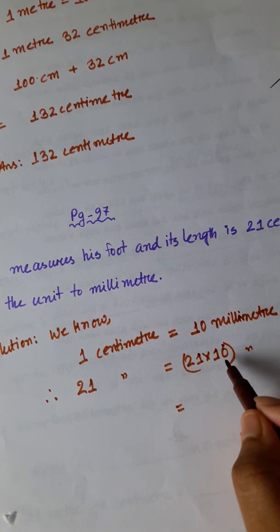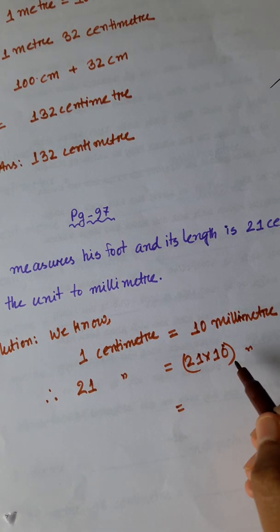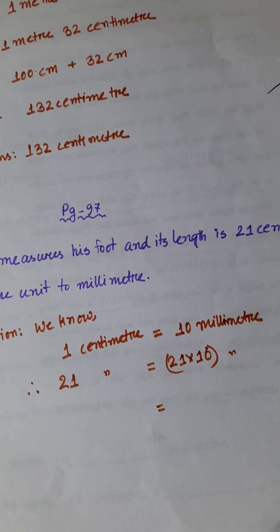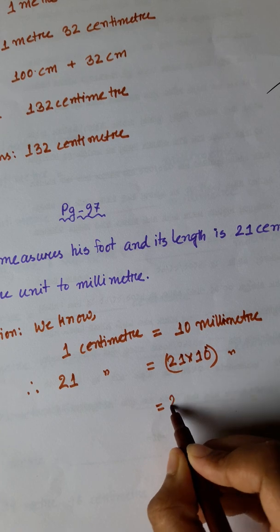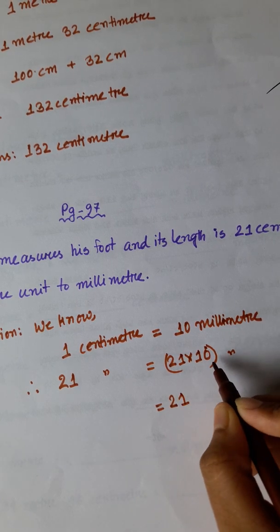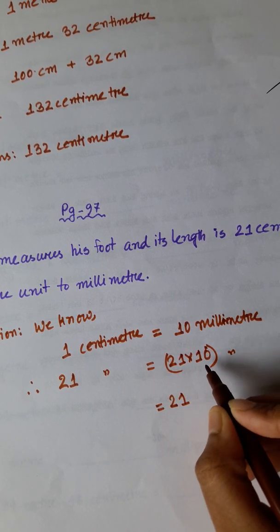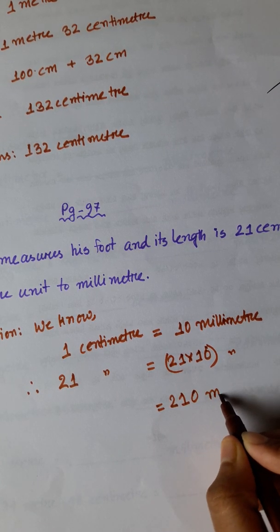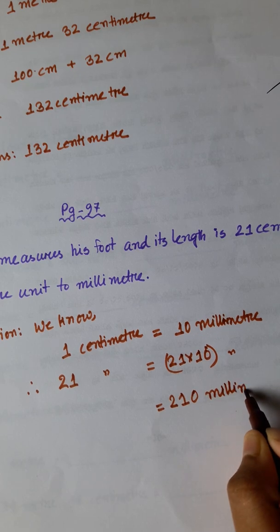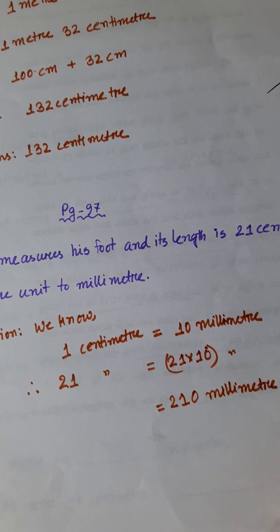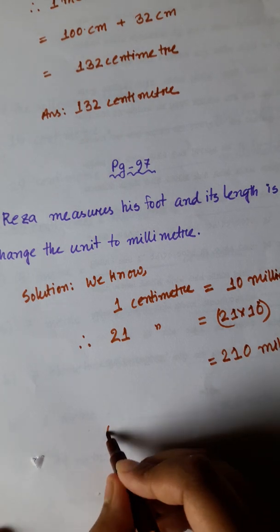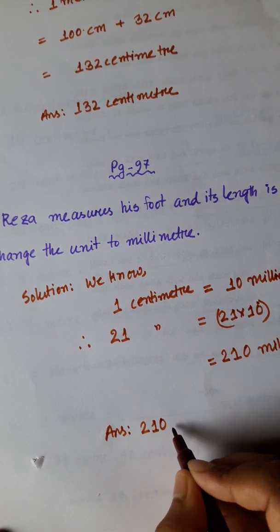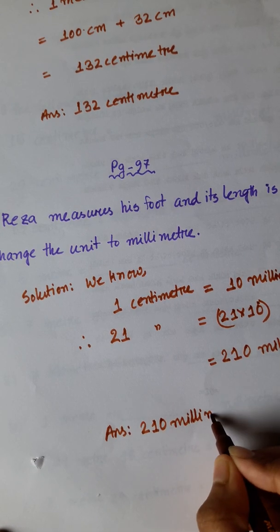We know 1 centimeter is equal to 10 millimeters. So the answer is 210 millimeters.